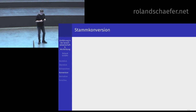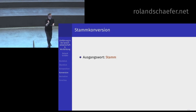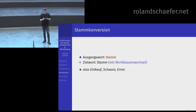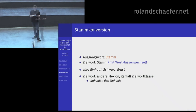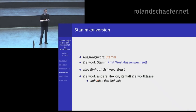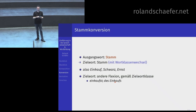Gestrichen ist ein Partizip – Sie können ein Adjektiv daraus machen und sogar noch ein Substantiv, das Gestrichene. Bei Schwarz und schwärzen nehmen Sie auch den Stamm schwarz vom Adjektiv und machen den Verbstamm draus, kriegen aber gleichzeitig noch Umlaut – das ist kein reiner Konversionsfall mehr. Genauso bei Schießen und Schuss: den Stamm Schuss gibt es heutzutage nur noch in dem Substantiv, also kann das aus heutiger Perspektive keine Konversion mehr sein. Das war in den meisten Fällen die Stammkonversion: das Ausgangswort, Sie nehmen den Stamm, und das Zielwort ist wieder ein Stamm mit Wortklassenwechsel – also Einkauf, Schwarz, Ernst.